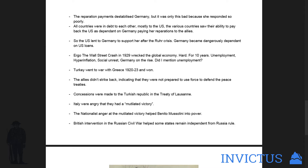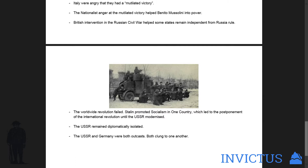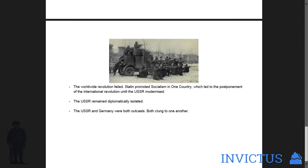Concessions were made to the Turkish Republic in the Treaty of Lausanne. The Italians were angry because they had a mutilated victory previously, and the nationalist anger at the mutilated victory helped to propel Mussolini into power and fascism. The British intervention in the Russian Civil War helped some states remain independent from Russian rule. The worldwide revolution failed for the communists, so Stalin promoted socialism in one country, which led to the postponement of the international revolution until the USSR modernised. This made the USSR diplomatically isolated, and as a result both the USSR and Germany were outcasts who clung to one another for mutual recognition in times of isolation.